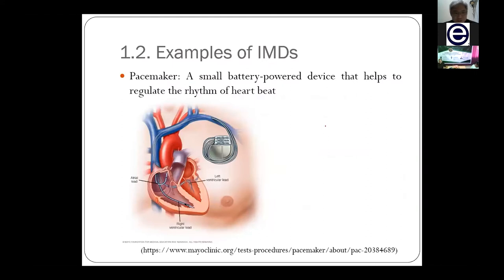The first IMD is the pacemaker, probably one of the most common IMDs we see in elderly people. A pacemaker is installed near the heart and is meant to regulate an irregular heartbeat — a condition known as arrhythmia. Normally, doctors would advise patients to install a pacemaker so it can monitor the heartbeat and ensure that the rhythm returns to its normal pace.